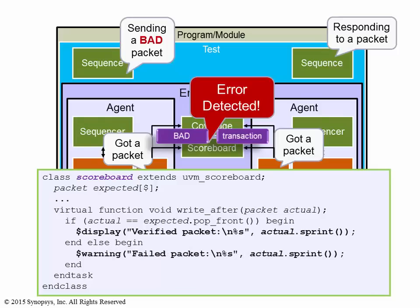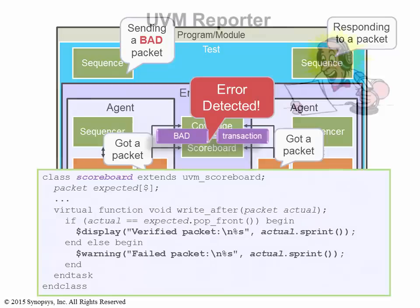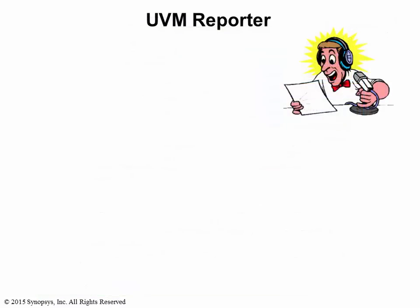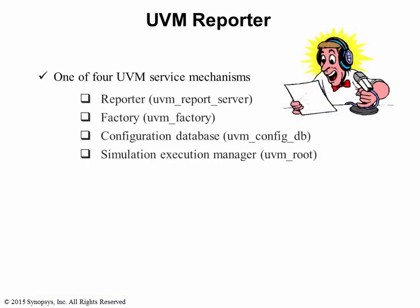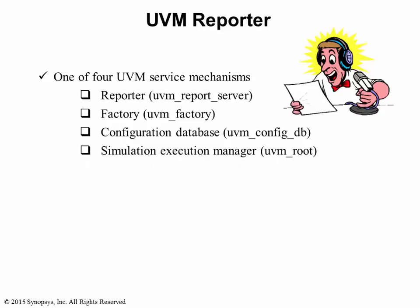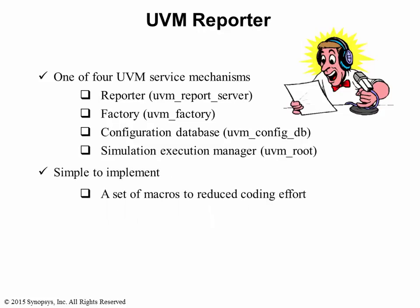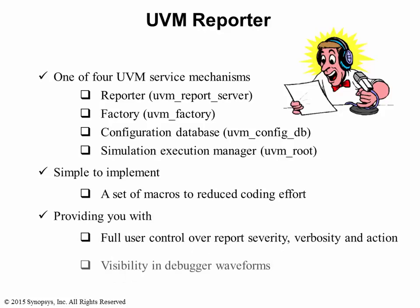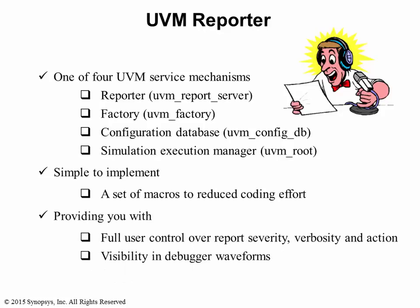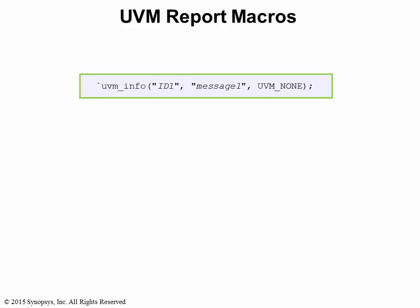This is what the UVM reporter mechanism gives you. The UVM reporter mechanism is one of four service mechanisms you get when you import the UVM package. It is simple to implement using the provided macros. The reporter mechanism will give you the ability to control the report's severity, verbosity, and action. On top of that, you'll be able to view these messages in the debugger waveform. Let's take a look at the macro.